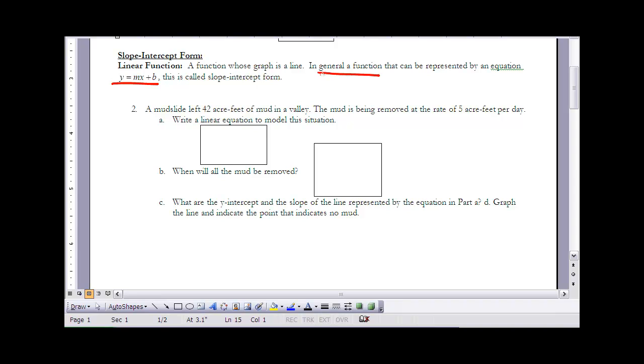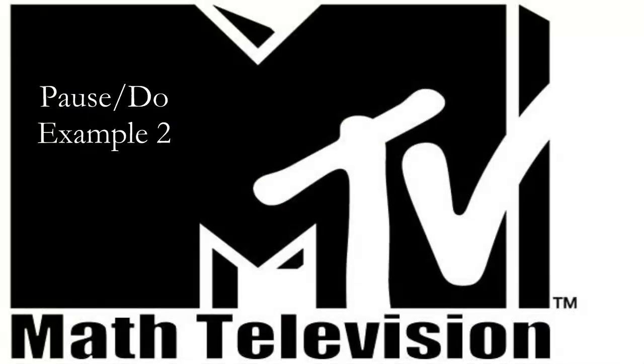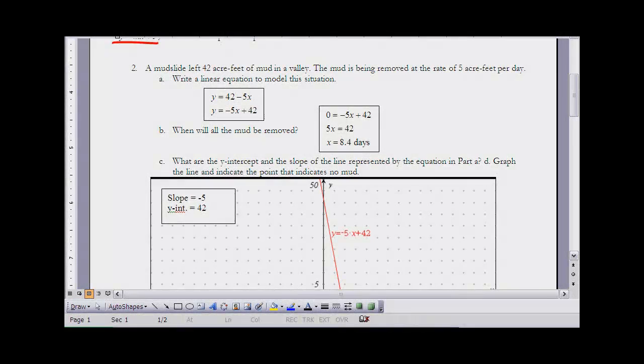We want to take a look at applying that here in example number two. If you want to take a few minutes, pause the video. Why don't you try number two and then I'm going to go ahead and go through that here on the notes. In number two it says a mud slide left 42 acre feet of mud in a valley. The mud being removed at a rate of five acre feet per day. Write a linear equation to model this situation. Well first of all, I know some of you kind of struggle with what does that mean acre feet.